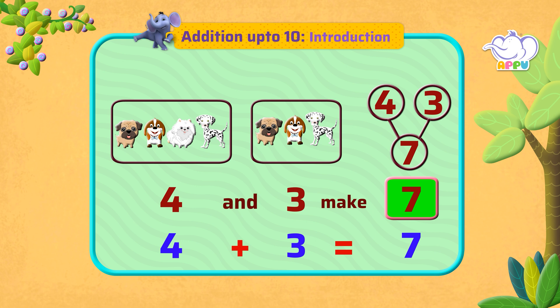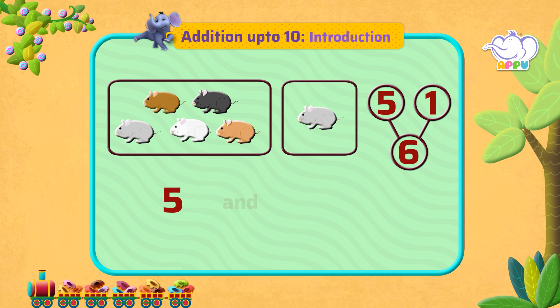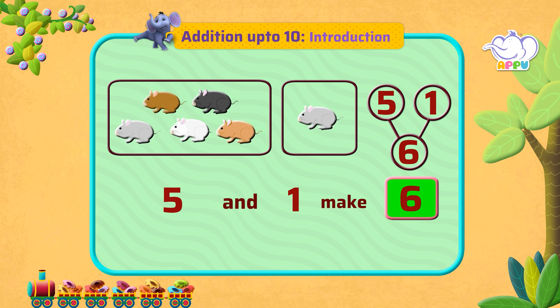Let's look at one more example. Here we have five hamsters, and here we have one. How many do they make all together? Five and one make six — they make six all together. So this can also be written as five plus one equals six.